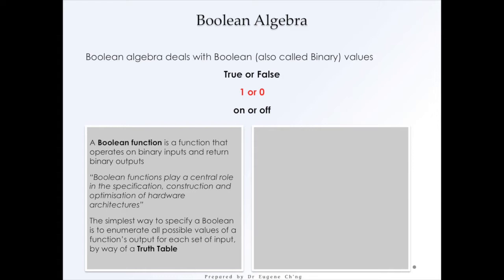A Boolean function is a function that operates on binary inputs and return binary outputs. So essentially, all logic gates are Boolean functions. You put in inputs and outcomes and outputs. The Boolean function plays a central role in the specification, construction and optimization of hardware architectures. The simplest way to specify Boolean is to enumerate all possible values of a function's output for each set of input by way of a truth table.